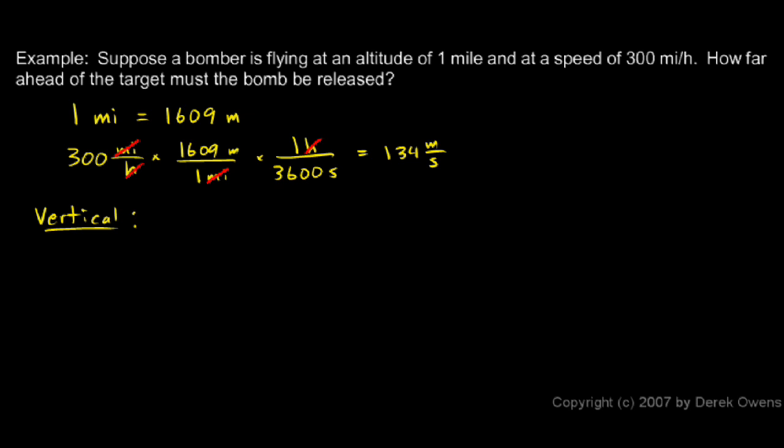I know the vertical distance. It's one mile or this many meters, 1,609 meters. So I can find the time it takes the bomb to fall. The time that it falls depends only on the height. The horizontal speed doesn't affect the time it takes to fall. So vertically, this is what I know.